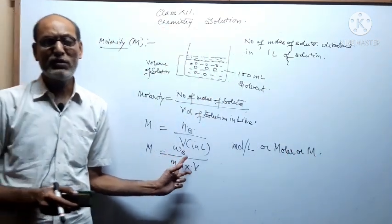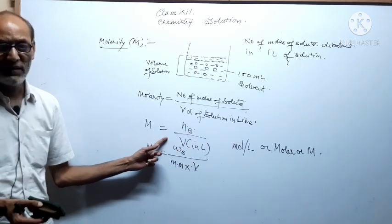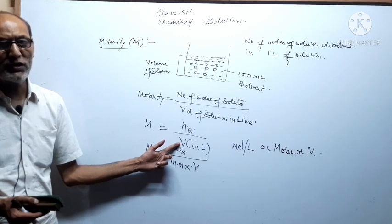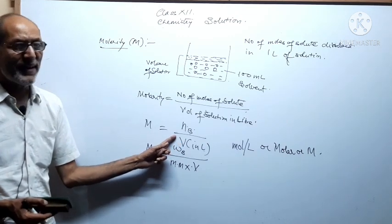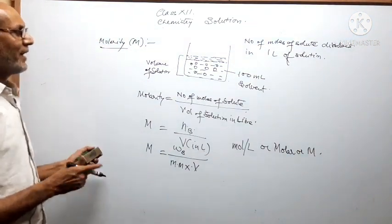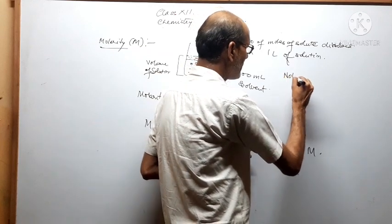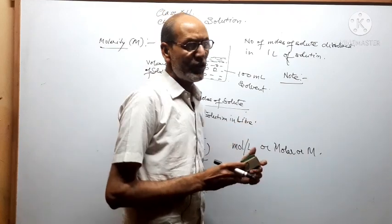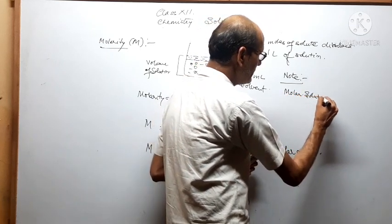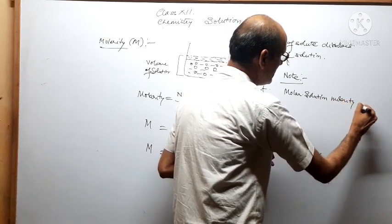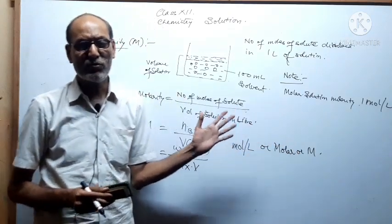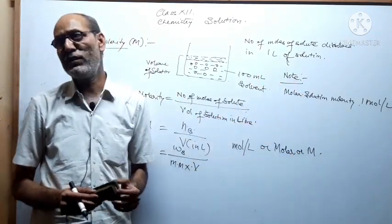Since volume is in the denominator of the molarity formula, changing the temperature changes the volume of the solution according to Charles's law, so molarity varies with temperature. One more important point: in some numerical problems you will see terms like 'molar solution,' which means molarity = 1 mol/L; 'semi molar' means molarity = 0.5 mol/L; and 'centimolar' means molarity = 1/100 mol/L.